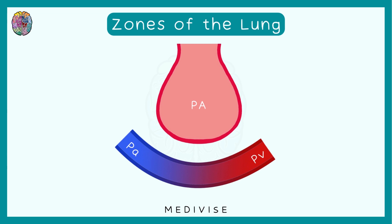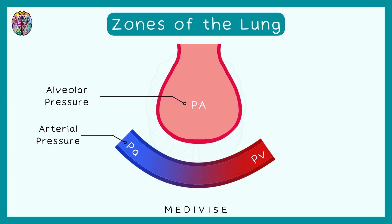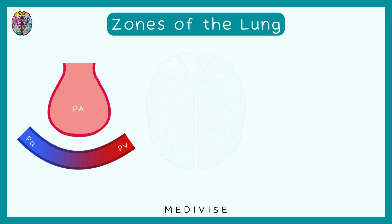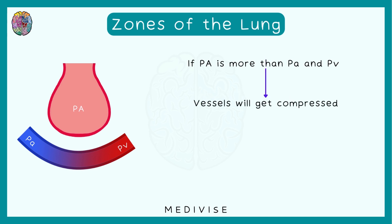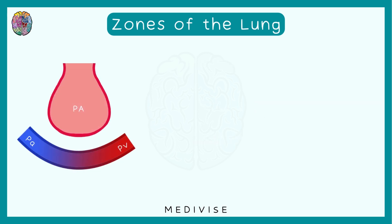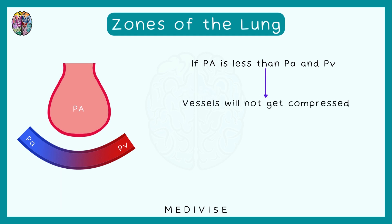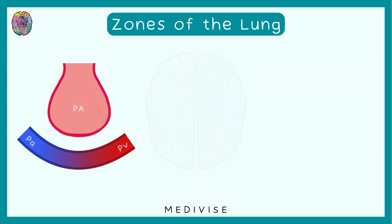There are three important pressure values to know: PA is the alveolar pressure, Pa is the arterial pressure, and PV is the venous pressure. In the first scenario, if alveolar pressure exceeds both arterial and venous pressure, the alveolus compresses the vessels and no perfusion takes place. In a second scenario, if alveolar pressure is less than both, blood flow occurs. A third scenario — alveolar pressure less than arterial but more than venous — will be addressed shortly.